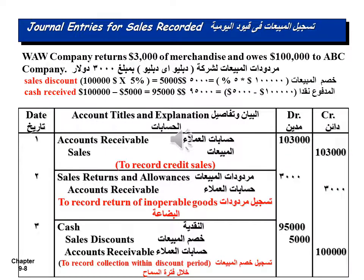Sales discount equals net sales $103,000 minus sales returns $3,000, equaling $100,000, times discount percentage 5%, equals $5,000. Then the cash paid within the discount period equals $100,000 minus $5,000 discount, netting $95,000.